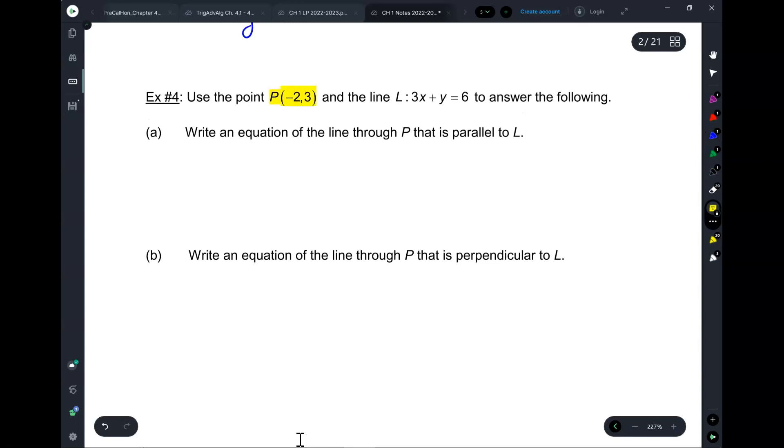So, p and this, okay? You have the point p, and this is the new line. To answer the following, write an equation through p that is parallel to l. So, parallel to l means same slope as l. Right.